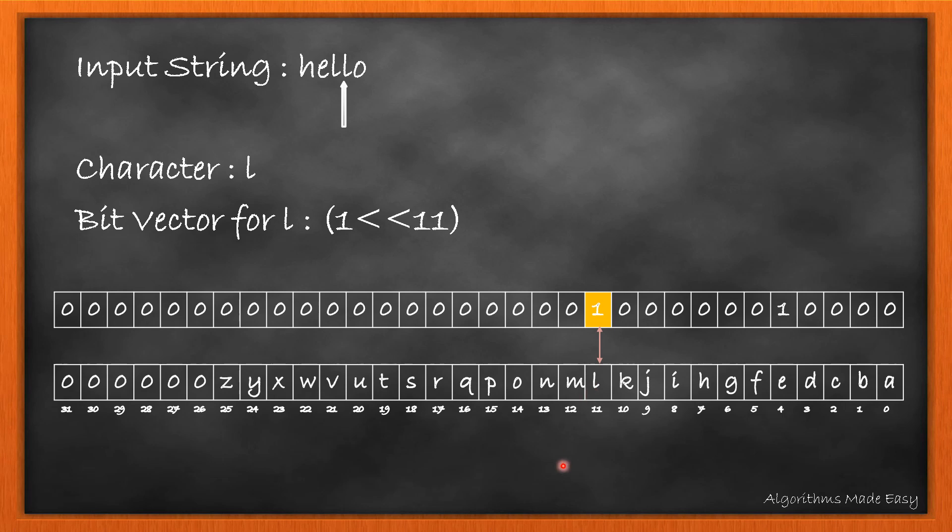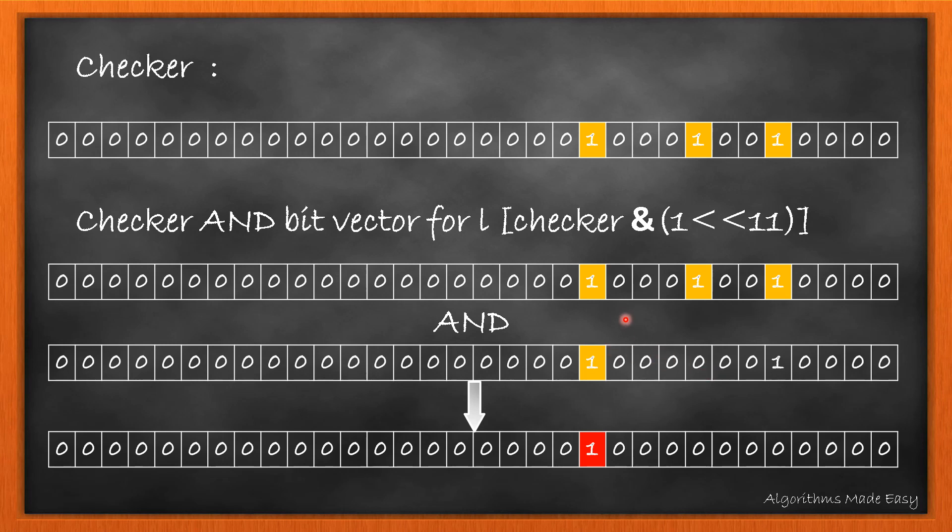Moving on to the next character, bit vector is same as for the previous 'l'. Now, we can see that the resulted bit vector and the AND operation contains 1.